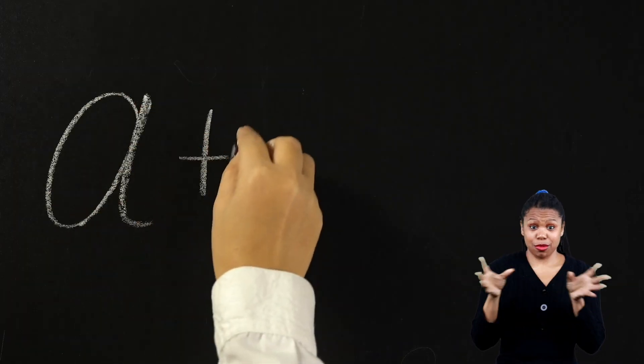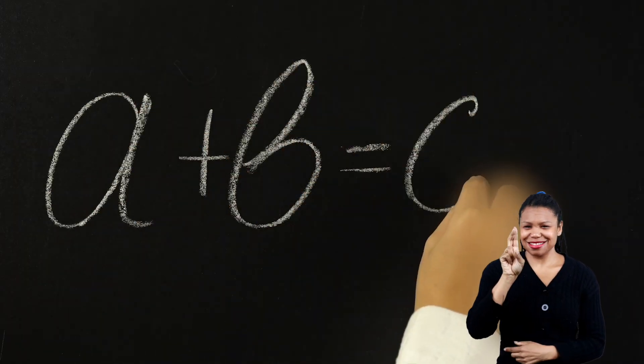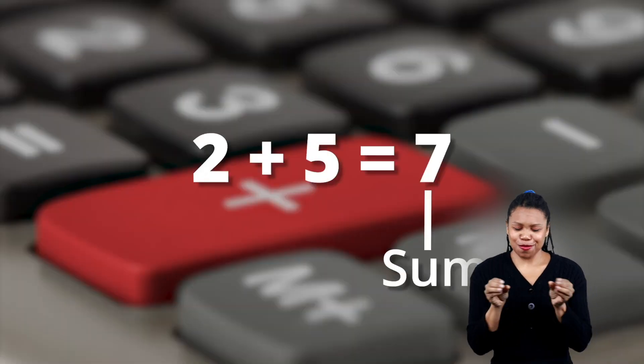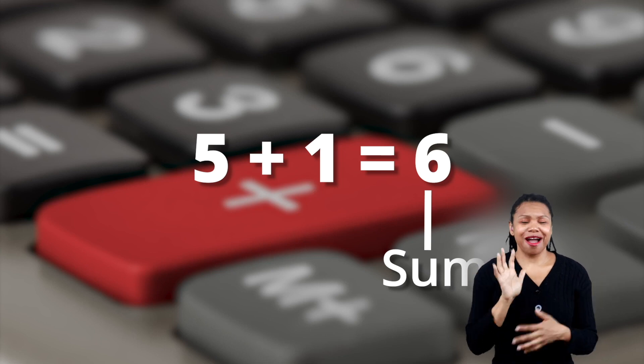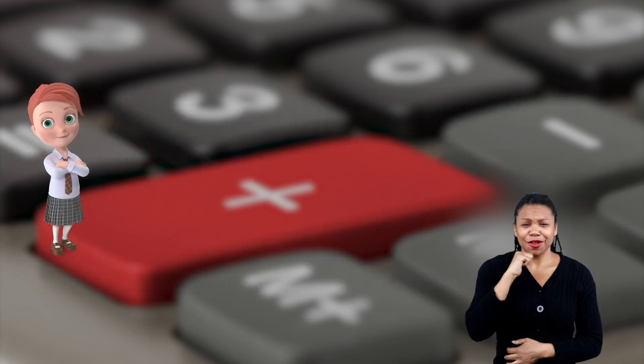Anytime you add two numbers together, the result is called the sum. For example, seven is the sum of two plus five. Six is the sum of five and one.